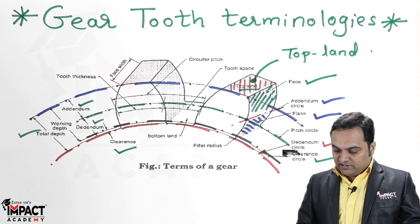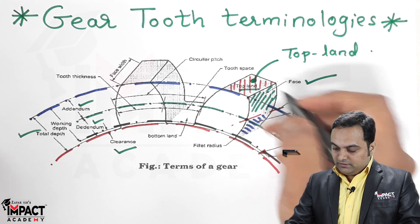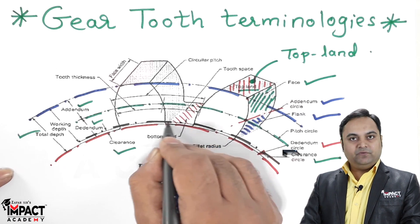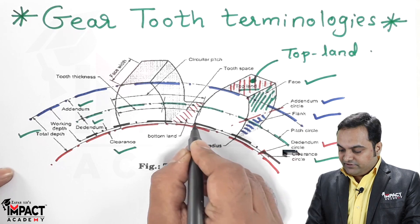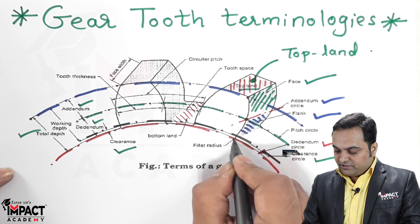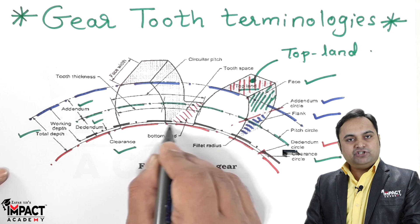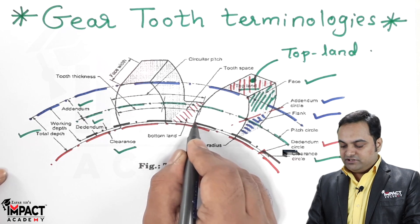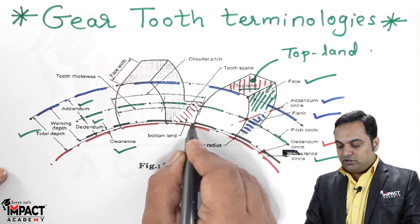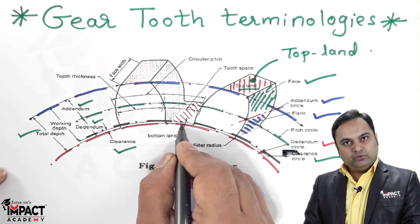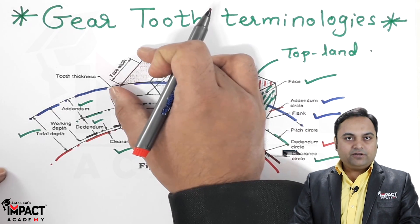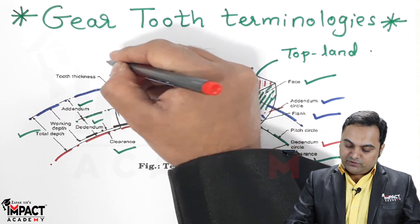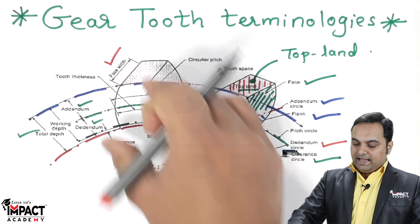Similar to the top land, we have the bottom land as well — that is the space between two gear teeth. A slight fillet radius is provided to avoid sharp corners, providing a smooth curve which also helps reduce friction. The width of the gear teeth is called the face width.